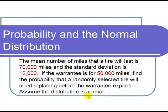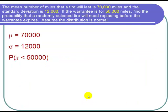Let's start out with our cast of characters. We're given the mean number of miles is 70,000, so mu equals 70,000. We're given the standard deviation is 12,000, so sigma equals 12,000.